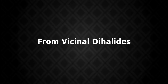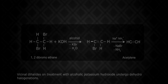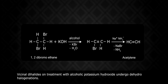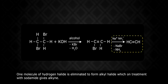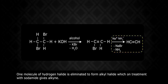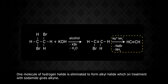From vicinal dihalides: vicinal dihalides on treatment with alcoholic potassium hydroxide undergo dehydrohalogenation. One molecule of hydrogen halide is eliminated to form an alkyl halide, which on treatment with sodamide gives an alkyne.